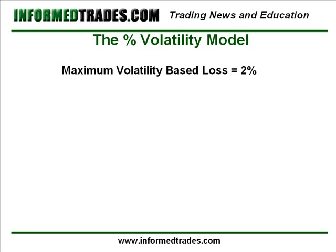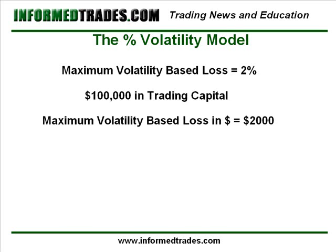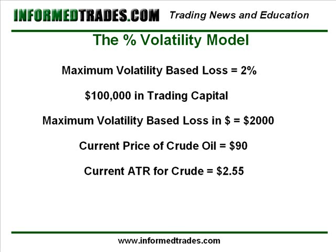From our last lesson, we had $100,000 in trading capital, so that would equate to a maximum volatility-based loss of $2,000 — that's 2% of the $100,000. Also from that example, the current price of crude oil was $90. And by pulling up a chart of crude oil, we would see that the current average true range for crude is $2.55.